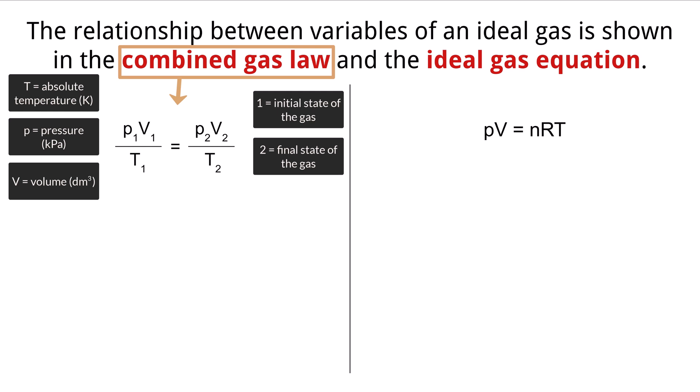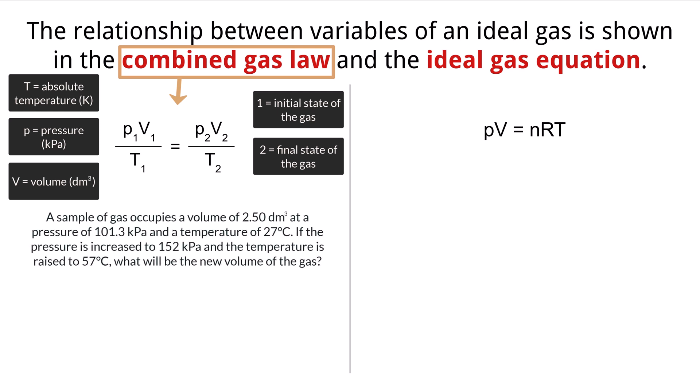Using this equation, we can take some known variables about one state of a gas and use them to figure out an unknown variable about another state. Let's work through this problem as an example. A sample of gas occupies a volume of 2.50 cubic decimeters at a pressure of 101.3 kilopascals and a temperature of 27 degrees Celsius.